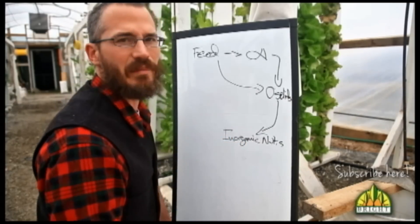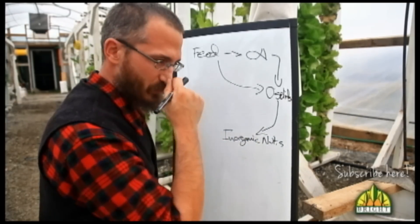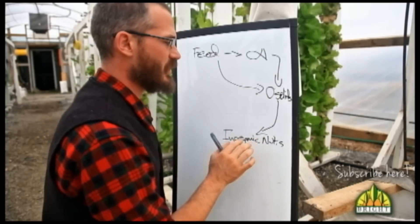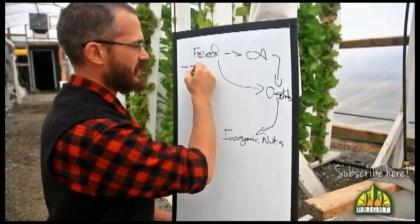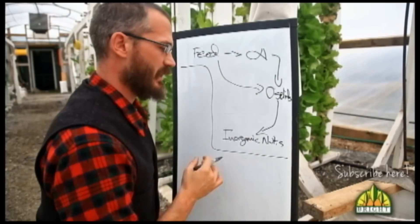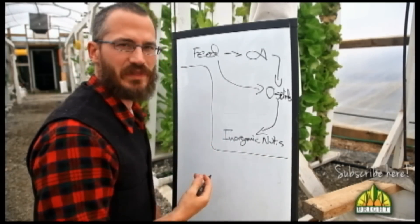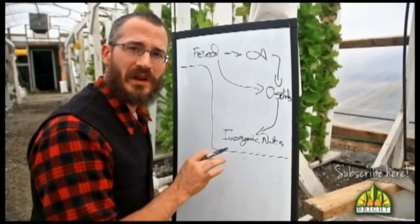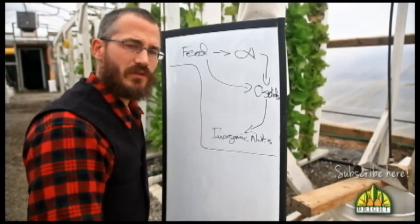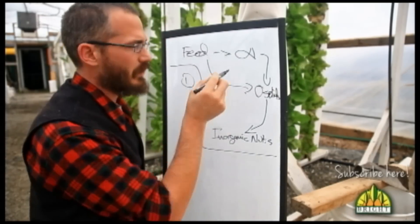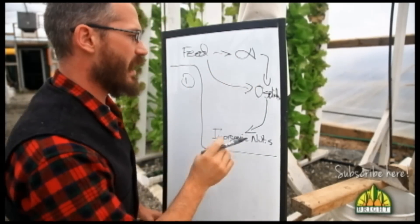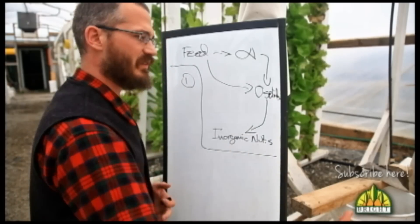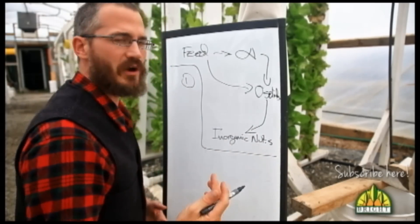They're also taken up by algae, they're also consumed by other organisms in the system. So when we talk about the nutrients going into the system, we have to understand how these nutrients interact with the organisms in our system and where they end up. Not everything that we put into our system will be available to our plants. So first off, if we put feed into our system, oftentimes the nutrients in that will never get to our plants. It will leave the system before it has a chance.